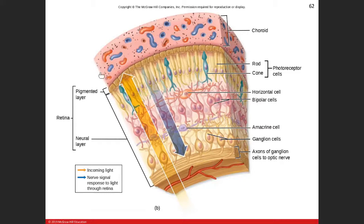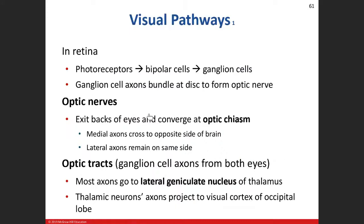So here are the two layers: the pigmented layer and the neural layer made up of those different cells. After the photoreceptors are stimulated, the signal goes to the bipolar cells, and then finally to the ganglion cells. All the ganglion cell axons converge on the optic disc — remember there are no photoreceptors there because that's where the nerves exit the eye and blood vessels enter and exit.